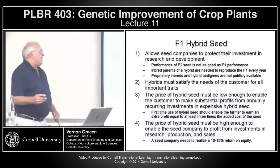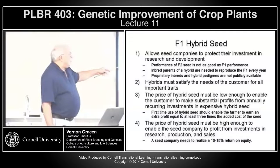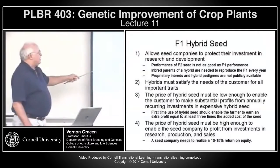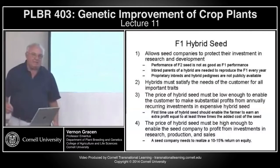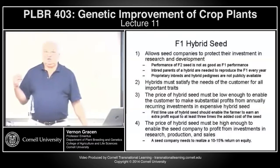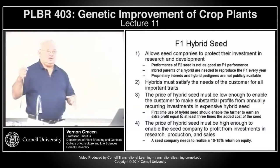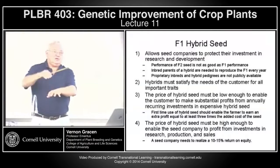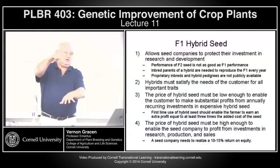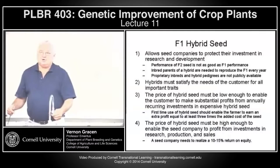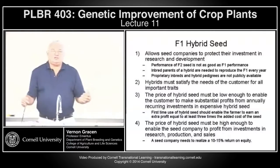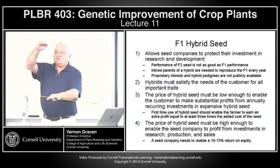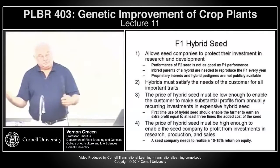When hybrid maize started, the rule of thumb was that the first-time use of hybrid seed should enable the farmer to earn an extra profit equal to at least three times the added cost of the seed. The farmer buys the hybrid seed, gets a large yield increase, and says: the seed company gets 25% of that increase, and I get 75% of it. That works.